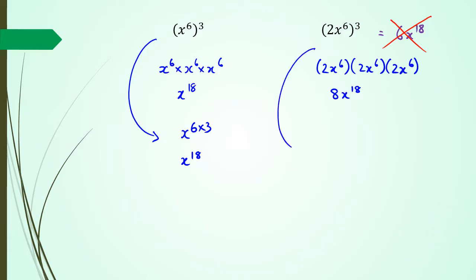The quicker way is to write this as 2 to the power of 3, multiplied by x to the power of 6 times 3. We do 2 to the power of 3 because 2 has a power of 1, and 1 times 3 equals 3. Simplifying: 2 to the power of 3 is 8, and x to the power of 6 times 3 is 18, giving us 8x to the power of 18.